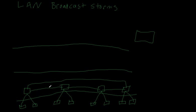He receives a frame and doesn't know where it's at. So he sends it back out. That destination is nowhere on this network — they're never going to find it. So you've got these frames going back and forth, multiplying and multiplying.